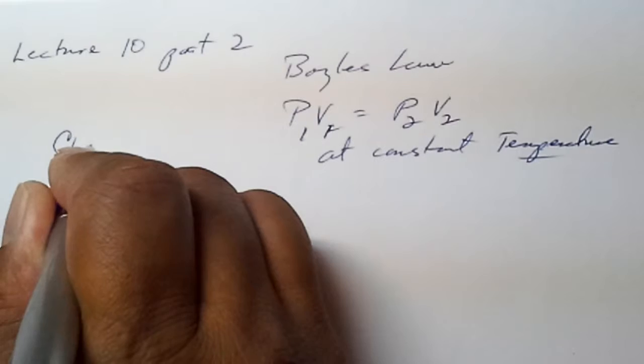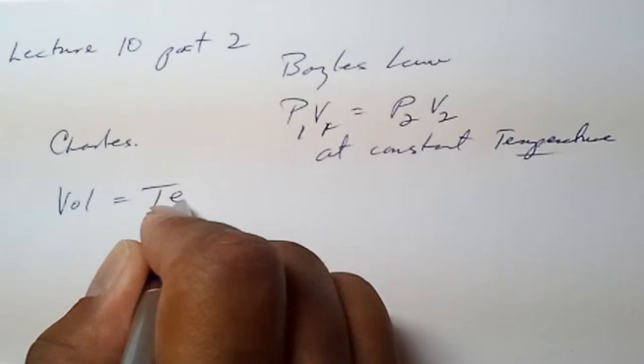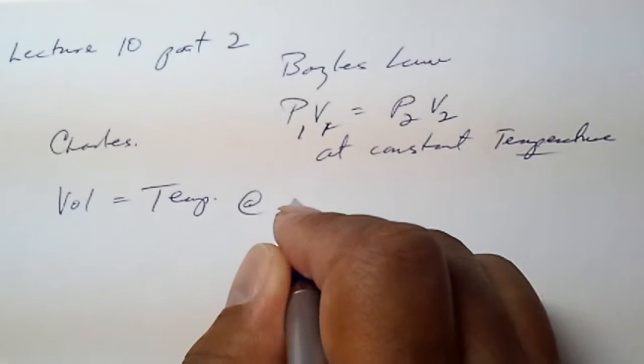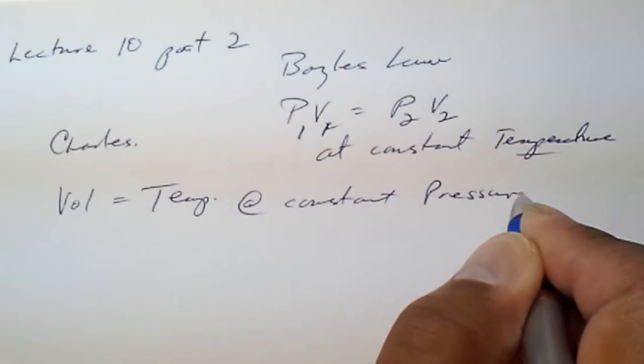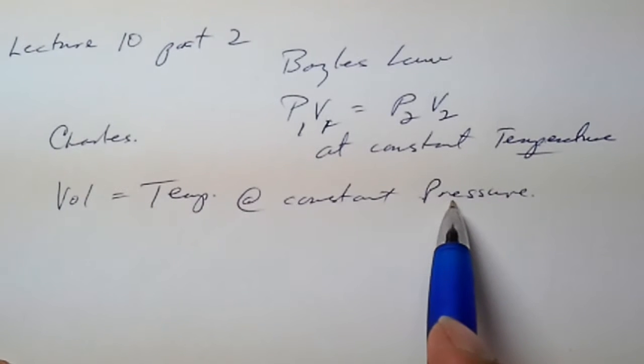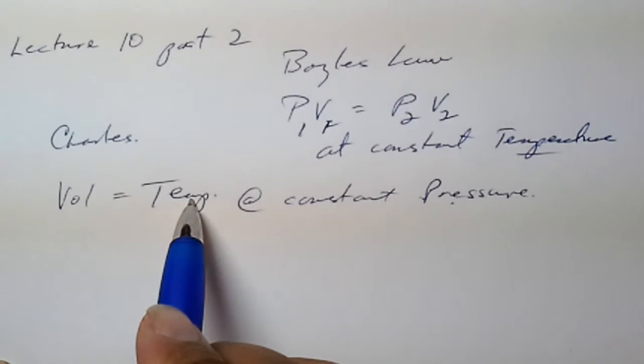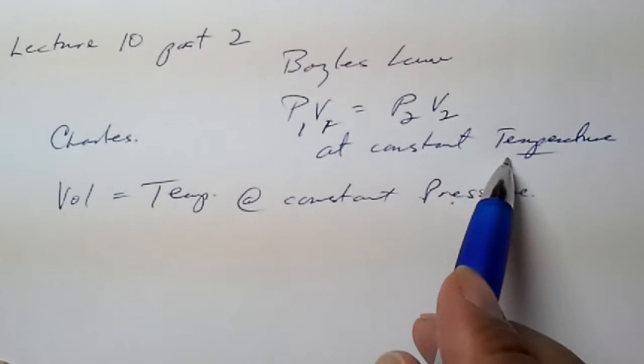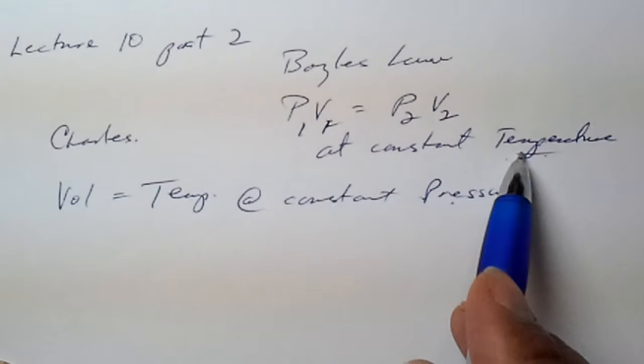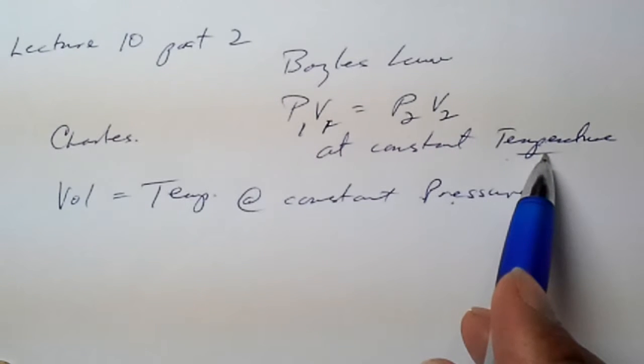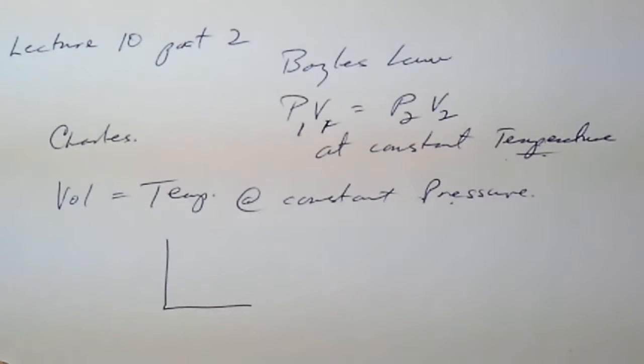The same is true for Charles. However, Charles related volume with temperature at a constant pressure. Of course, what we mean by that is that the pressure stays the same, regardless of whether temperature and volume are changing. The same is true with Boyle's Law. The pressure and volume will change, but the temperature of the systems that we're looking at stays the same. This is important if these laws are going to work.